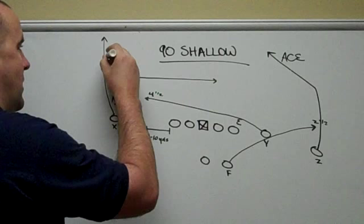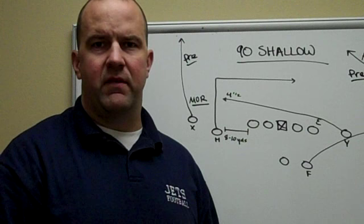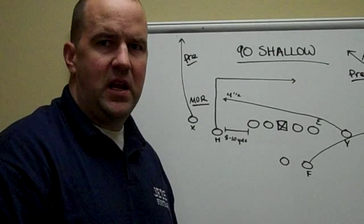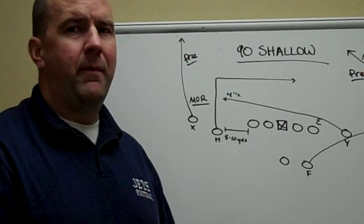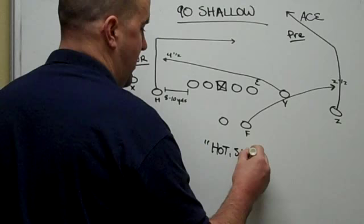These outside routes are pre-snap reads. What that means is the quarterback will look pre-snap and see if he likes the matchup or if he likes the grass given by the defense. If so, he will give the X or Z a signal telling him to be looking for the ball. If not, post-snap the quarterback will not go to the X or Z receiver in this concept. His progression — the quarterback's progression — is: hot, shallow, dig, shoot.